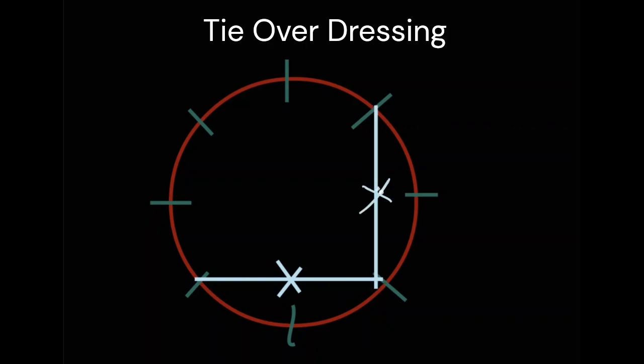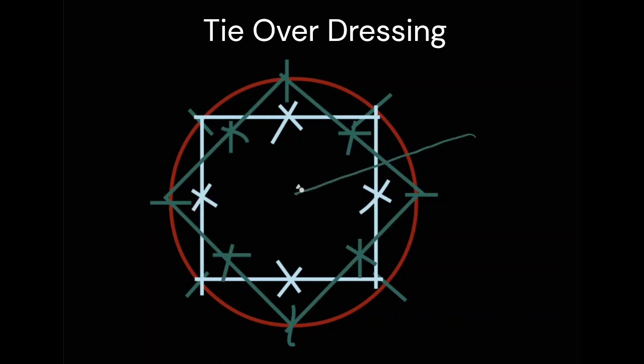So that whenever the knots come over here, wherever the knots come, those are the areas where there is maximum pressure of our tie-over dressing. So we are going to be very careful to the inside.